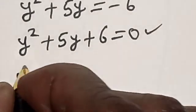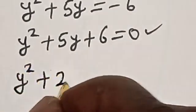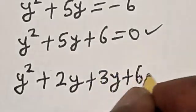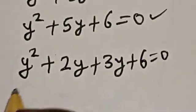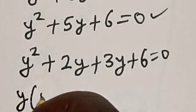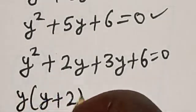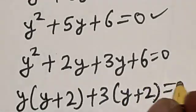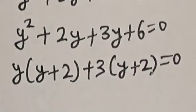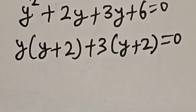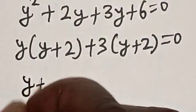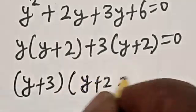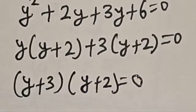Using factorization, we have y squared plus 2y plus 3y plus 6 is equal to 0. Then this is y(y plus 2) plus 3(y plus 2) is equal to 0, which gives us (y plus 3)(y plus 2) is equal to 0.